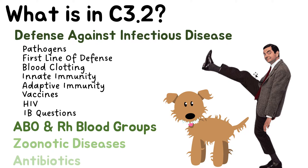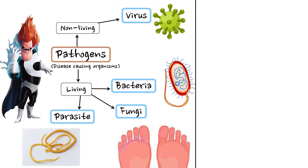This video will be quite straightforward and simple. So remember, what is a pathogen? This word keeps coming up and it's very important. A pathogen is a disease-causing organism — it's like a bad guy. But most of the time we cannot even see these pathogens. They can be classified into two categories: living and non-living. Non-living would be a virus, and living would be bacteria, fungi, parasites and some other things. But these are the key things you need to know.